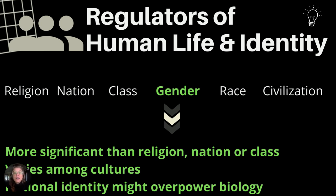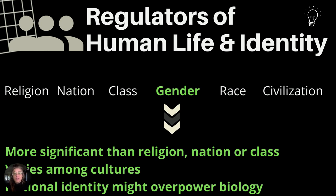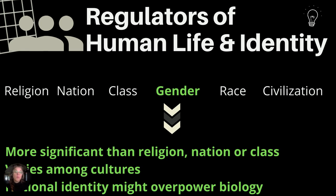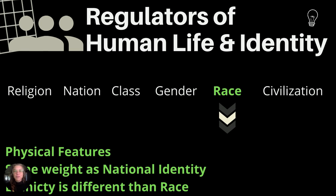The fourth regulator is gender identity, and it has been found that it is more significant than religion, nation, or class. Different nations also treat different genders differently. And overall, there's little solidarity among women globally. Some people have argued that gender identity is shaped more by national identity than biology, but we'll get back into that later in the class, and you can decide that for yourself.